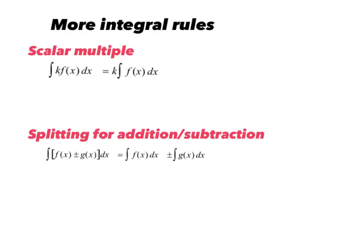We have more integral rules. The next one is the scalar multiple rule — you have some constant times a function. The integral of k times f(x) dx: pull the constant out front and integrate f(x). The second rule: you are allowed to split integrals for addition or subtraction. If I have f(x) plus g(x), I can integrate f(x) and add to it the integral of g(x).